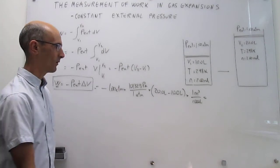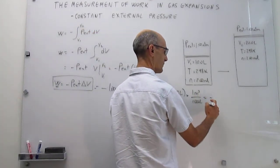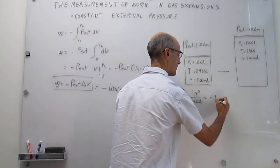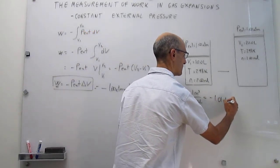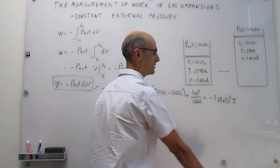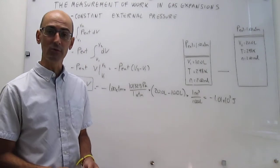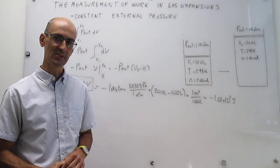So you calculate those numbers, and the amount of work is going to be negative, which it should be, and then it's minus 1.01 times ten to the three joules. So this gas is performing about 1,000 joules when it pushes against that external pressure.